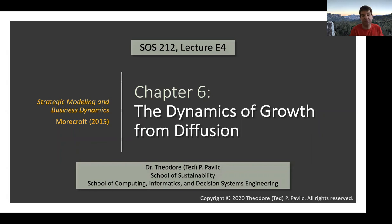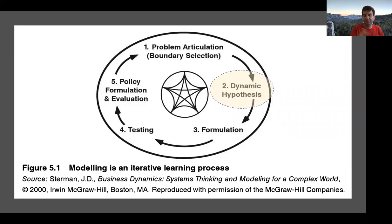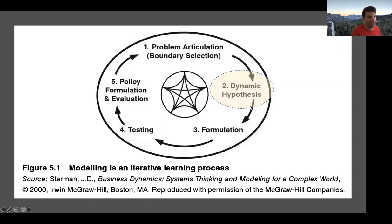So getting to dynamics — we skipped over chapter 5, but in chapter 5 Morecroft talked about how modeling is an iterative learning process. The idea is that you start with a dynamic hypothesis that allows you to start thinking, once you've articulated the problem of interest, about ways in which you can explain what's going on in that system. Then you start sketching out your feedback loops and testing your hypothesis.